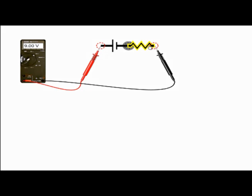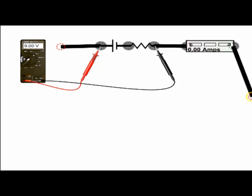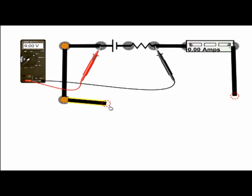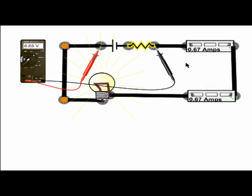So now I'm quickly going to build a circuit to see what happens to the terminal PD of my model battery when it's connected in a circuit. Here we can now see that the potential difference across the terminals of the battery is now down to 6.65 volts. So we started at 9 volts when it wasn't in the circuit, and now that there's a current flowing through it, the potential difference across the terminals of the battery is equal to the EMF minus the potential difference across the internal resistance of the battery. So this is what's causing the terminal PD to drop.